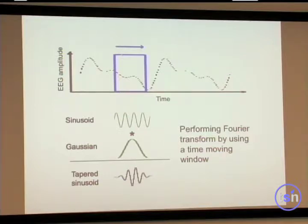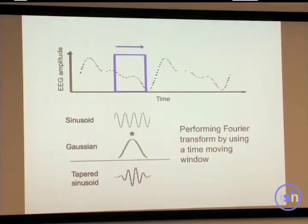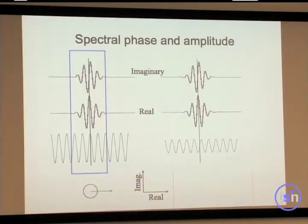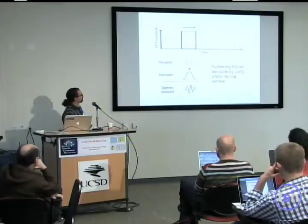This is our EEG signal and what we're going to do is select a window and perform time-frequency decomposition on this moving window. We use a sinusoid and multiply by a Gaussian to obtain a tapered sinusoid. What I'm going to describe here is more for the classical Fourier transform, and then we'll talk about wavelets.